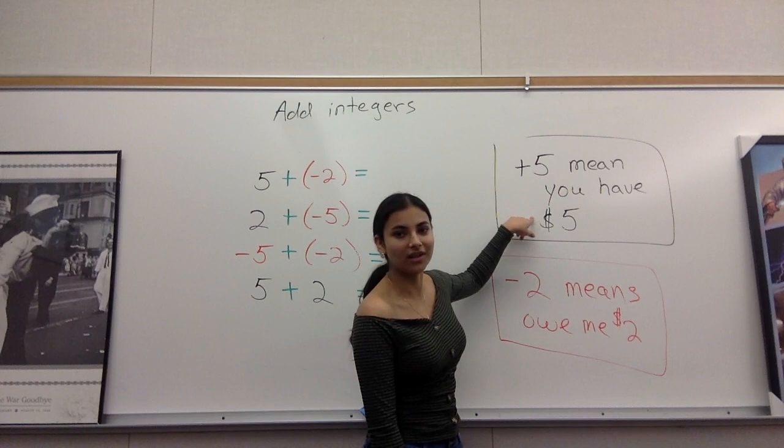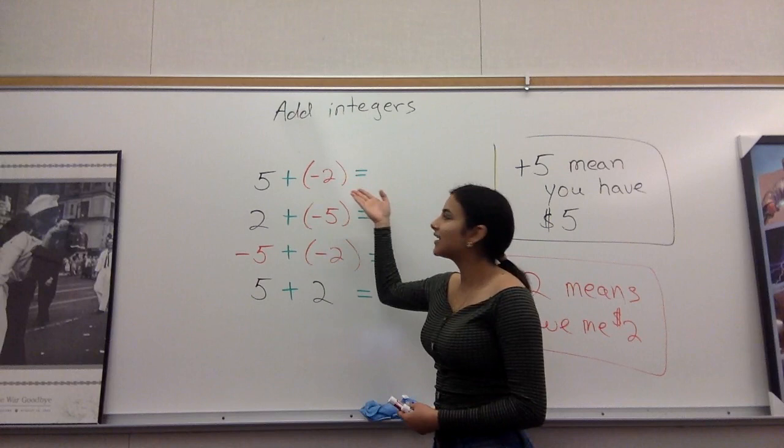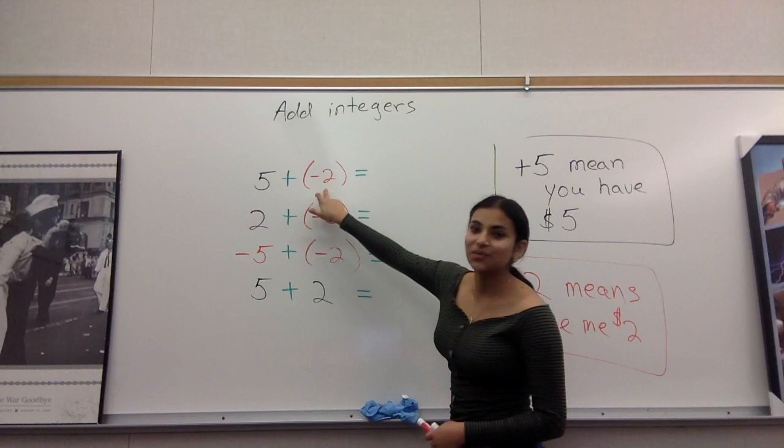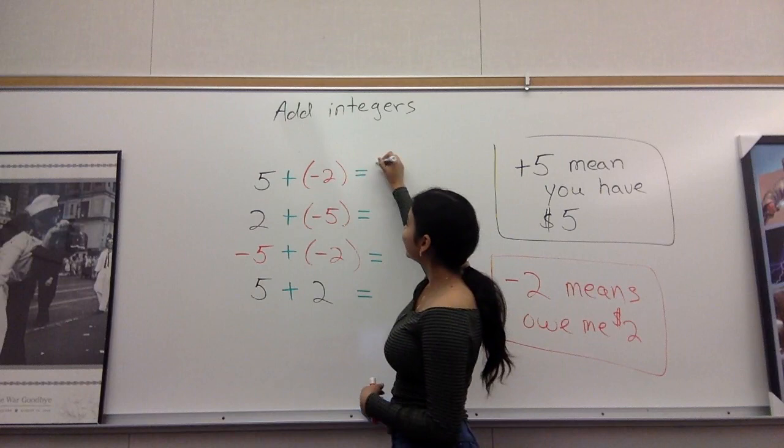So for example, in this first problem, you can see it's a positive five. That means that you have five dollars, and it's a negative two, which means that you owe me two dollars. So if I see you and I see that you have five dollars, I'm going to be like, I want my money, pay me back. Once you pay me back, you're left with three dollars. So that's how you do it.